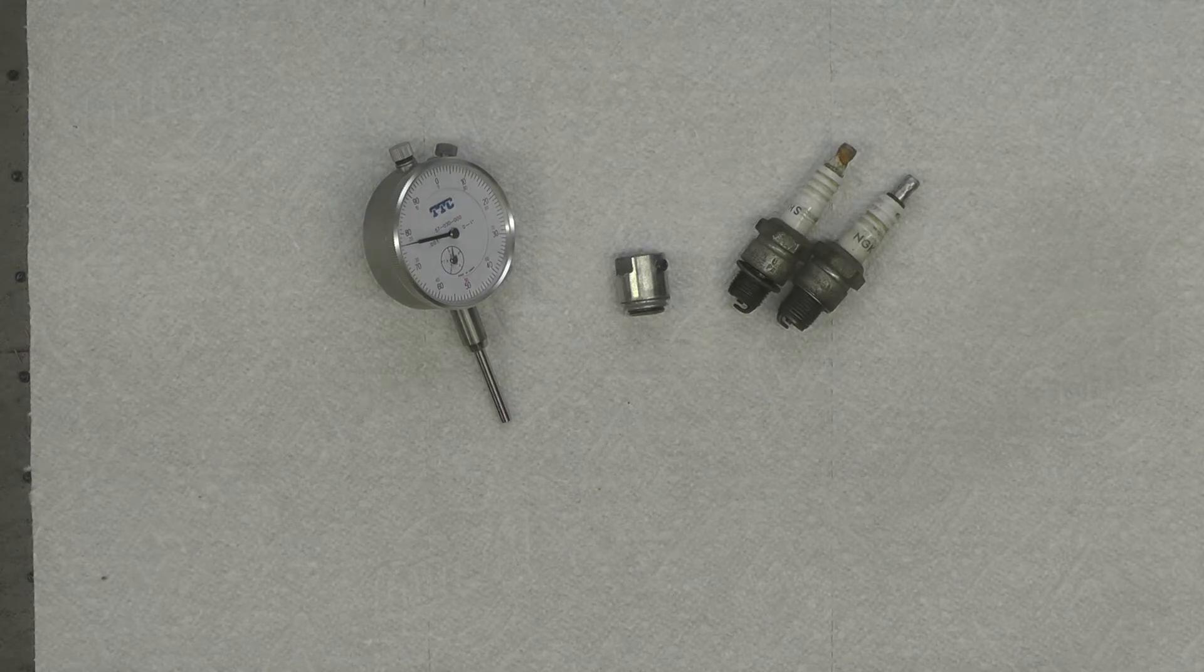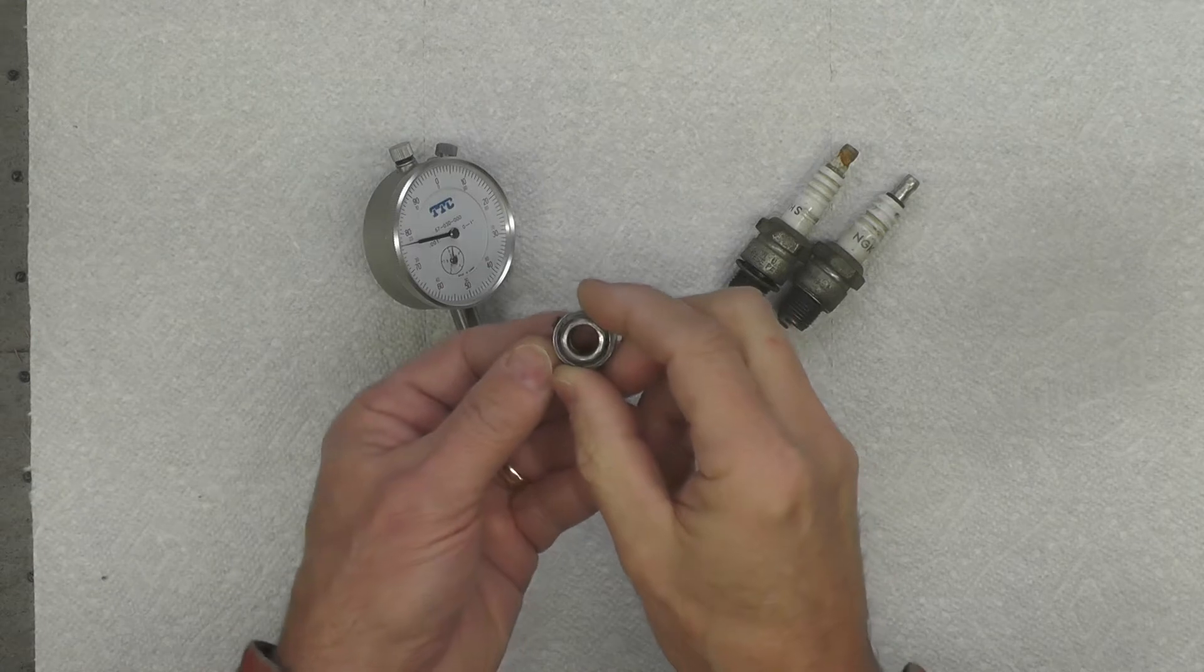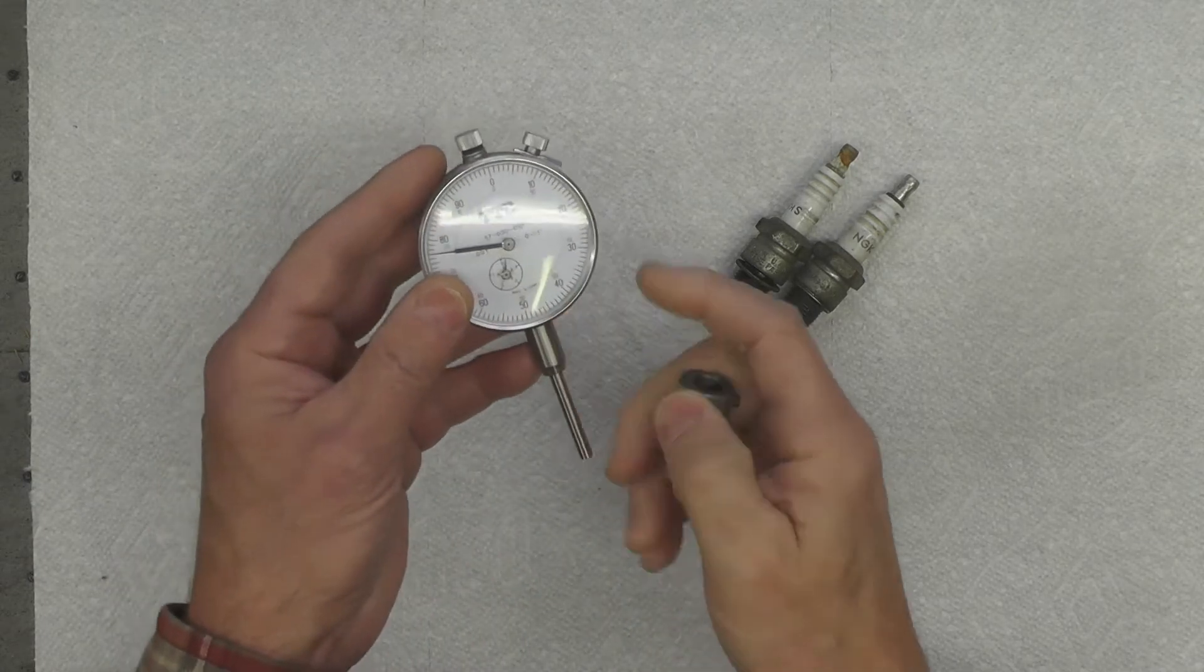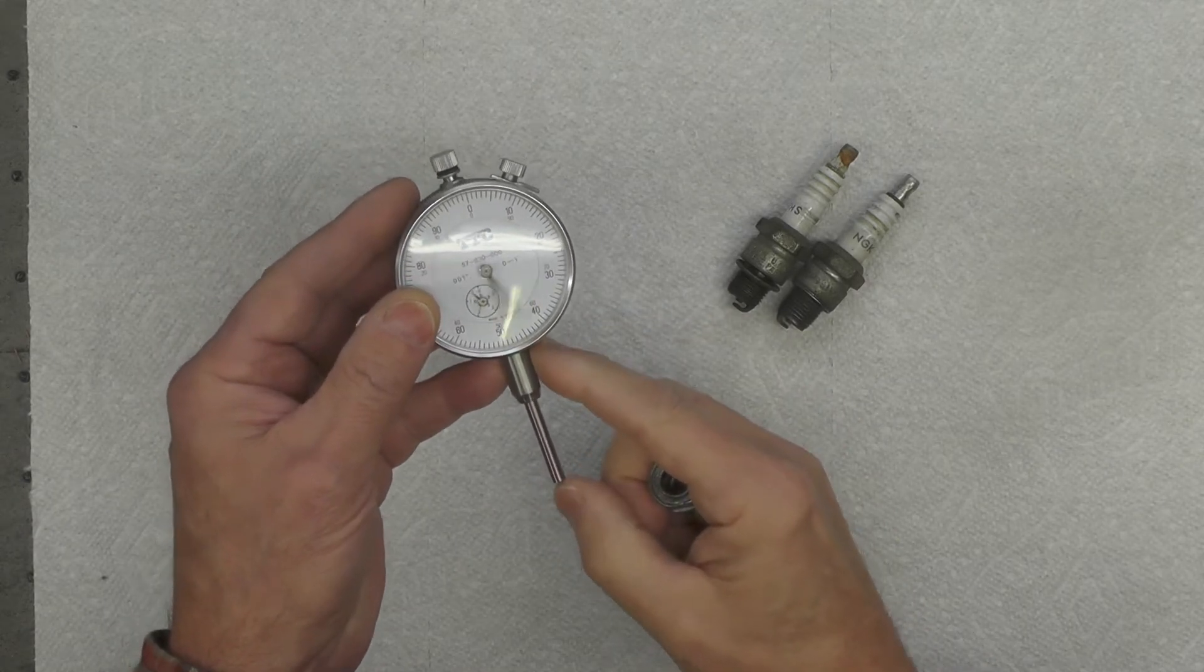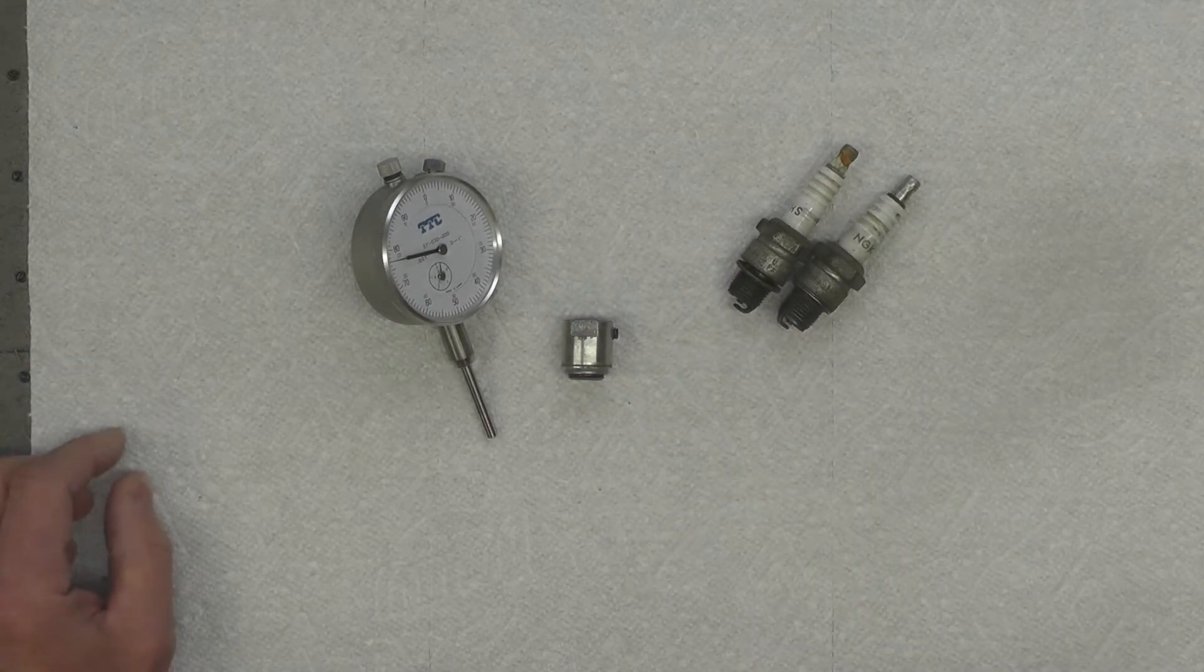Welcome back folks. Today we're going to fabricate a holder and adapter to allow us to use an inexpensive dial indicator to set the ignition timing on small two-stroke engines.